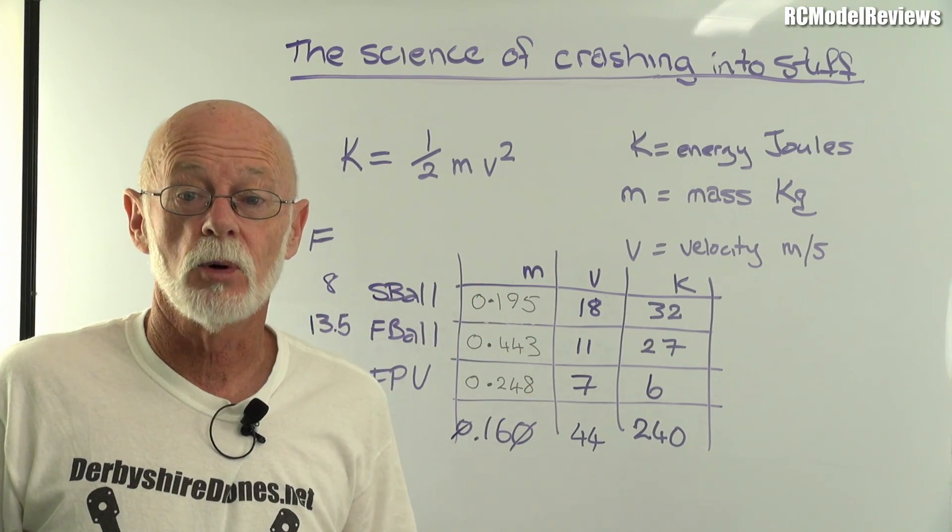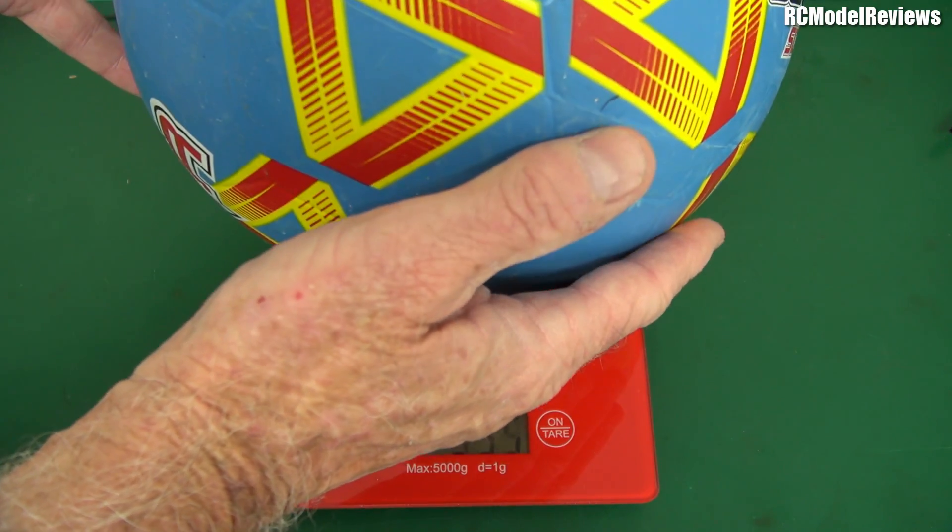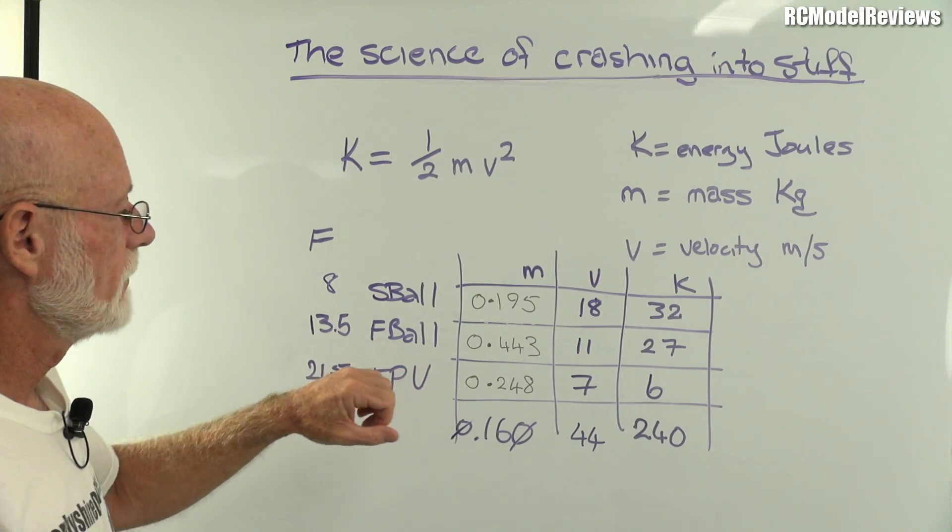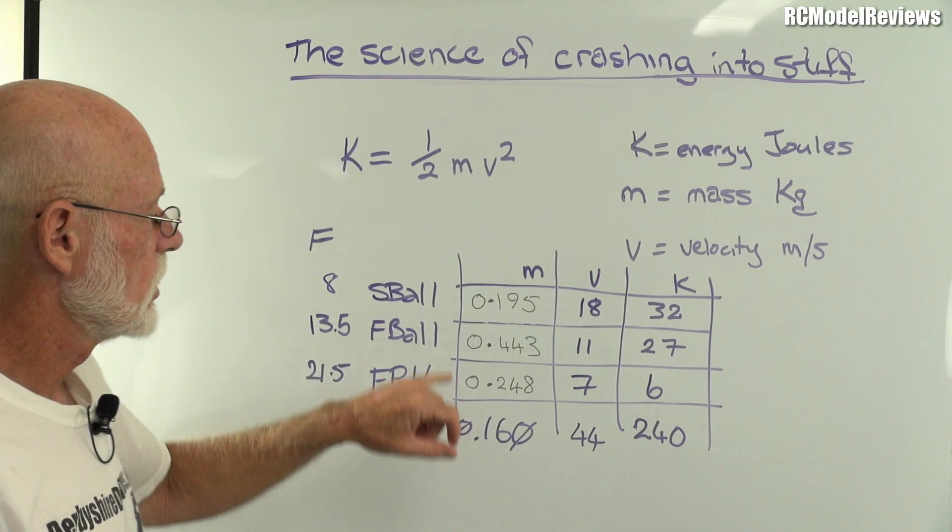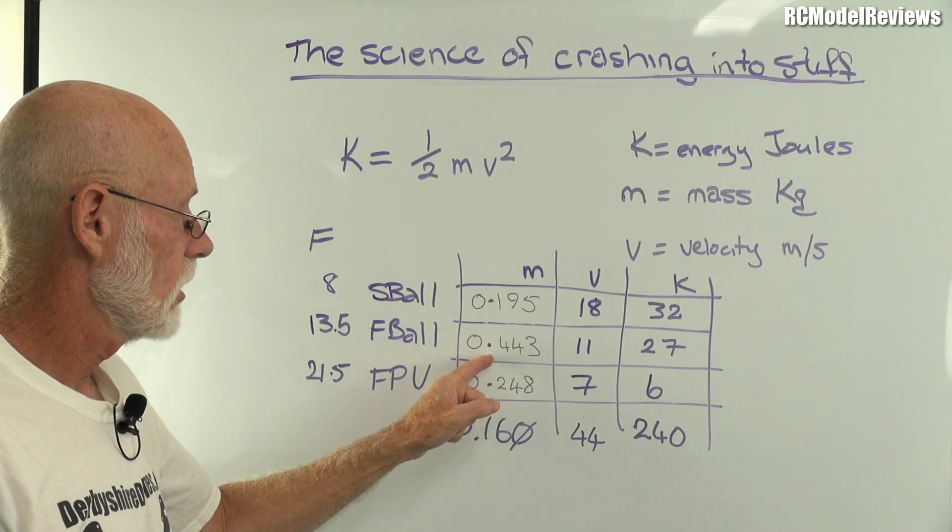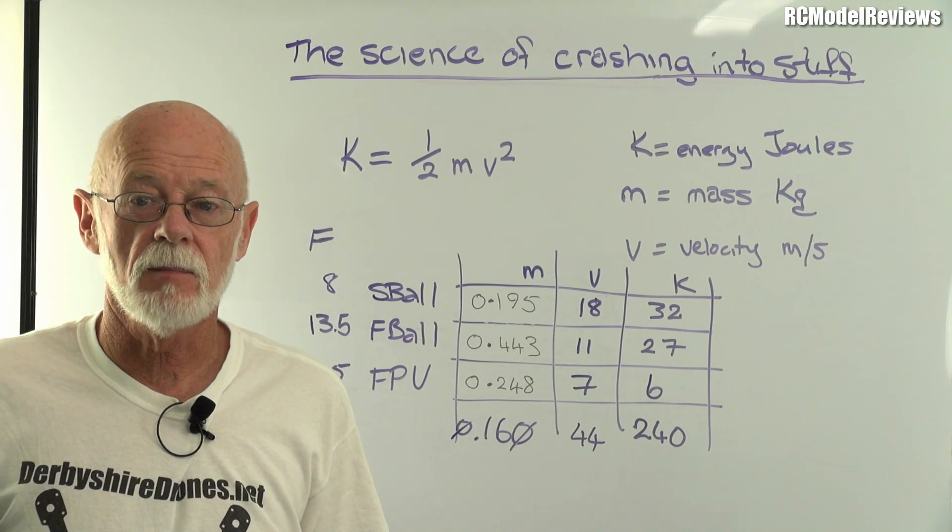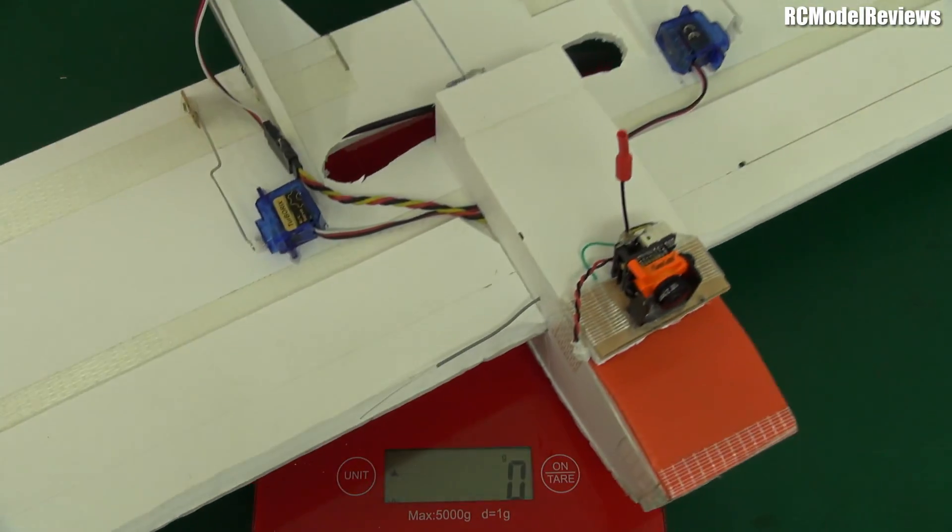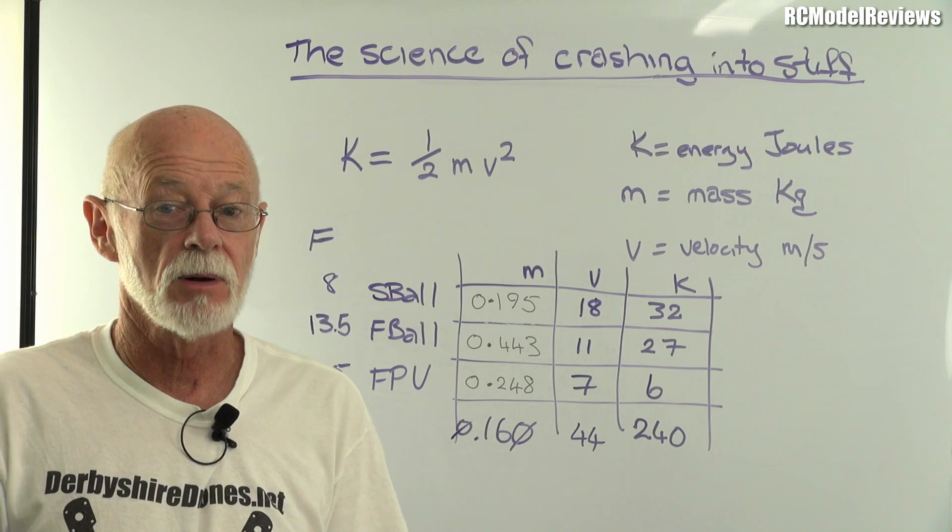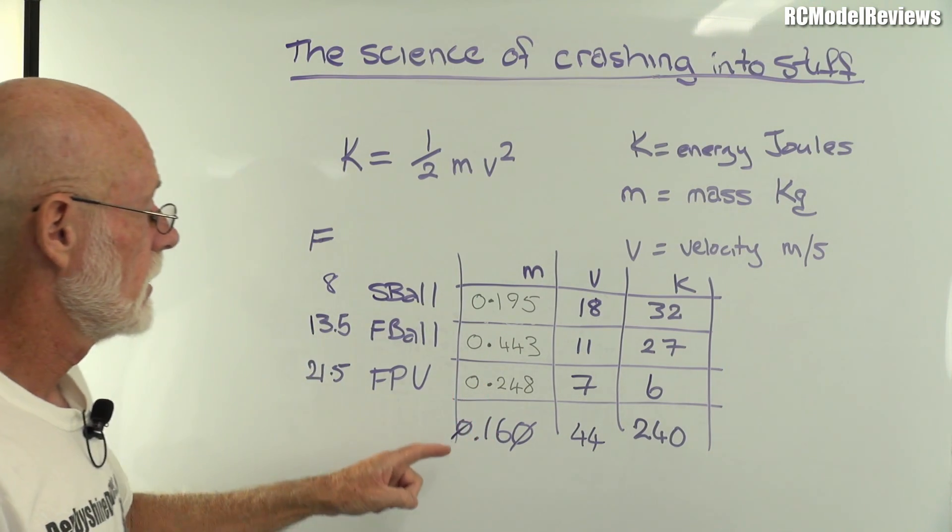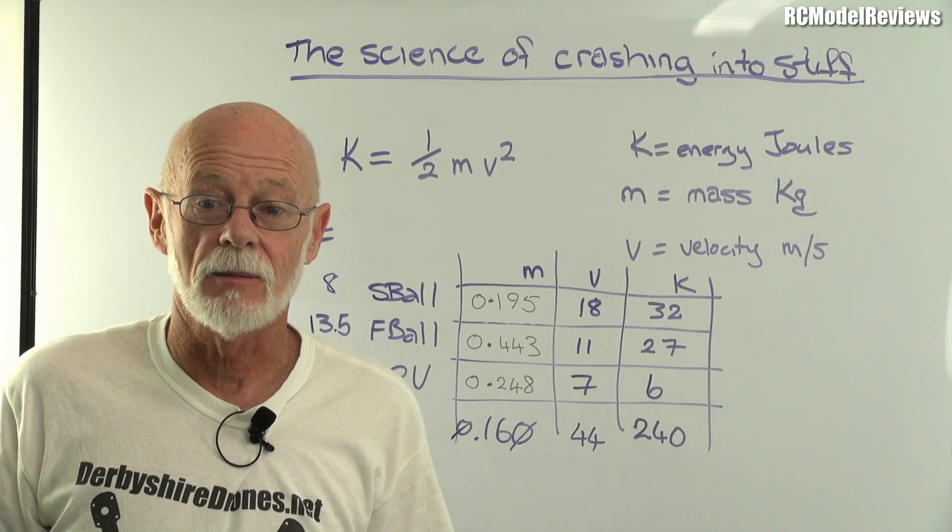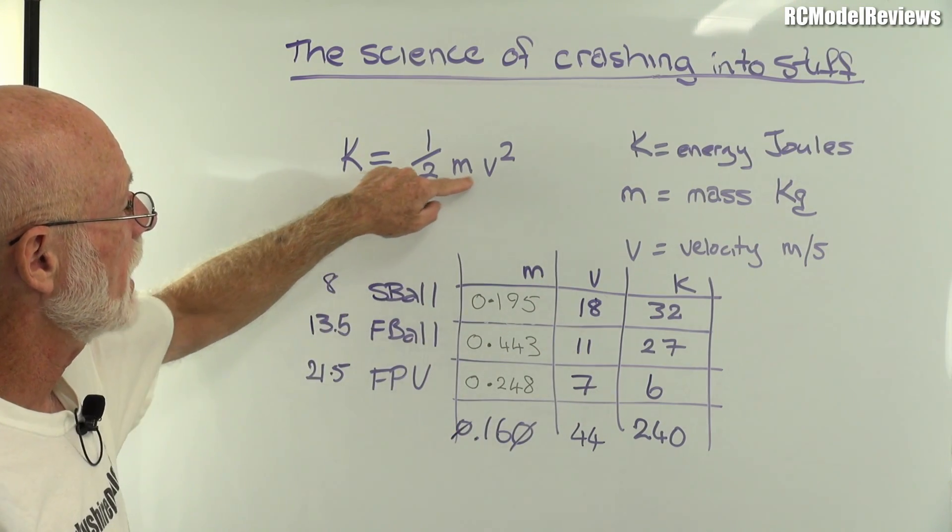I got the football and put it on the scales. As you'd expect, it was quite a bit heavier. It came in at 433 grams, which is 0.443 kilograms. Then I got my FPV model, which true to its name is sub-250. It measured in with battery ready to go, even charged up with a plethora of electrons, it came in at 248 grams or 0.248 kilograms.